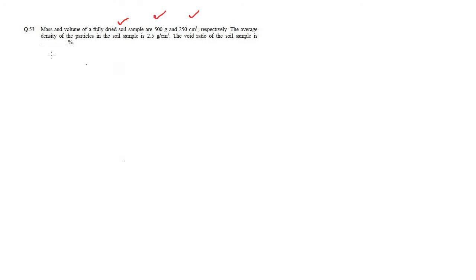In this question we are given the mass and volume of a fully dried soil sample. Fully dried soil sample means it does not have water — it has solid particles but also has gaps, the void space. The void spaces do not have water but the void spaces are there. The mass and volume of the fully dried soil sample are given as 500 and 250. We need the average density of the solid particles and also the void ratio, where void ratio V_r = volume of voids / volume of solids.